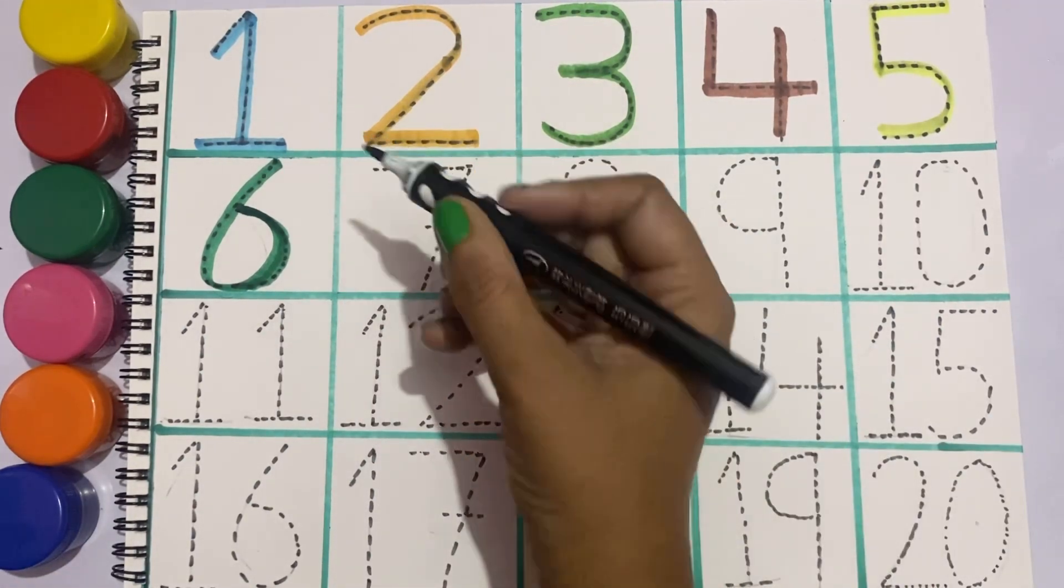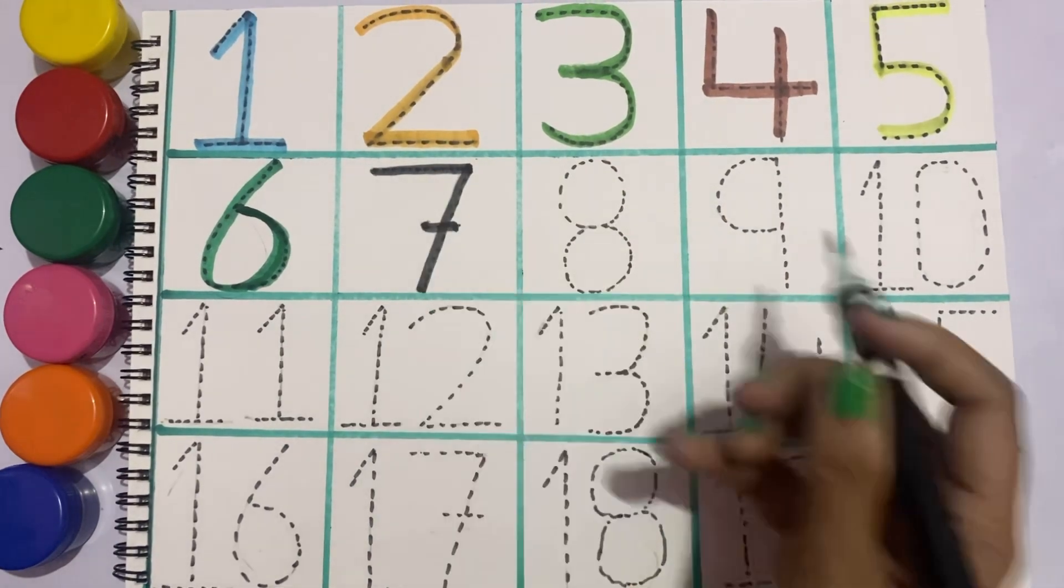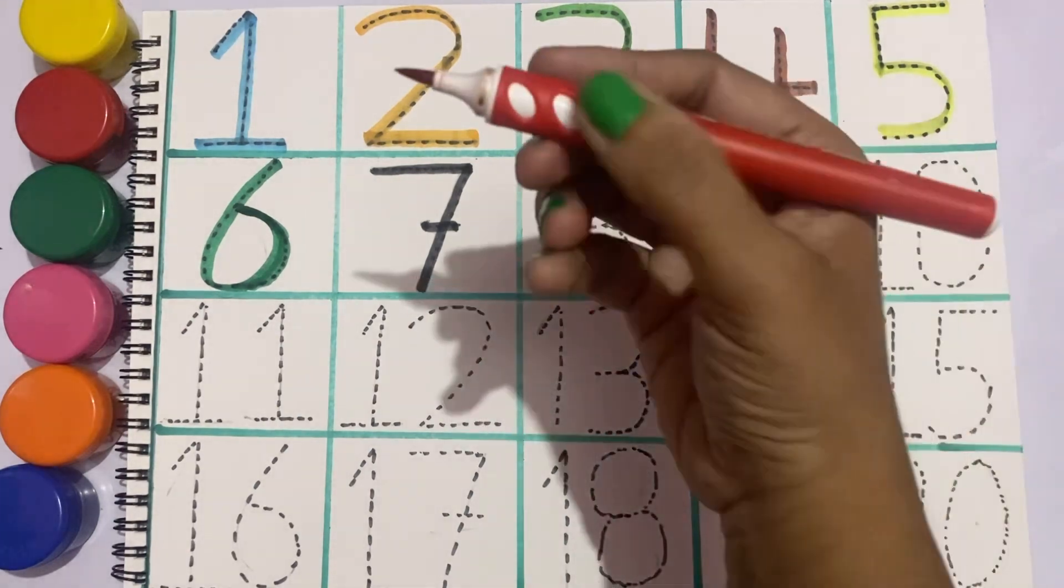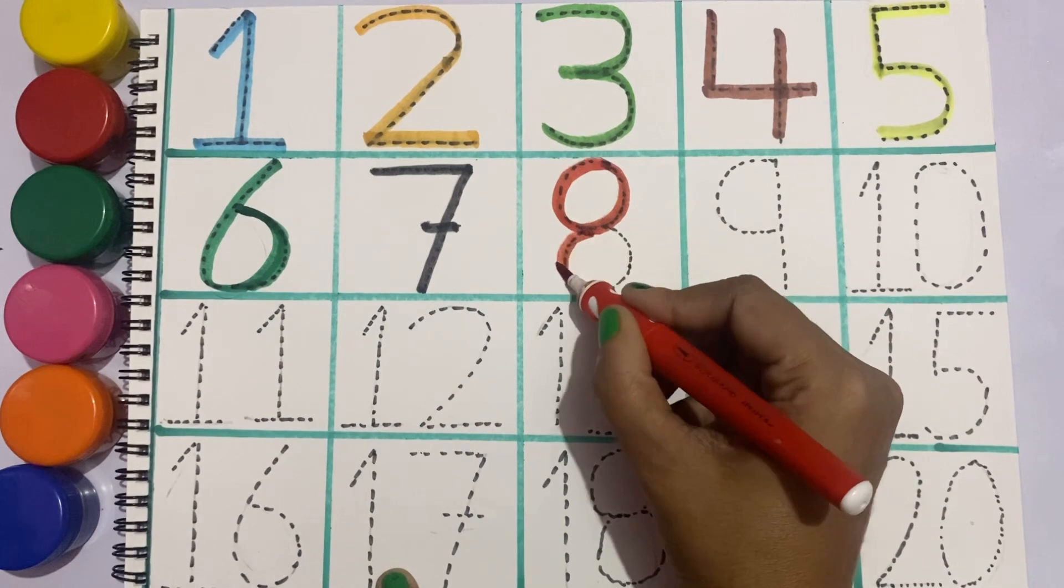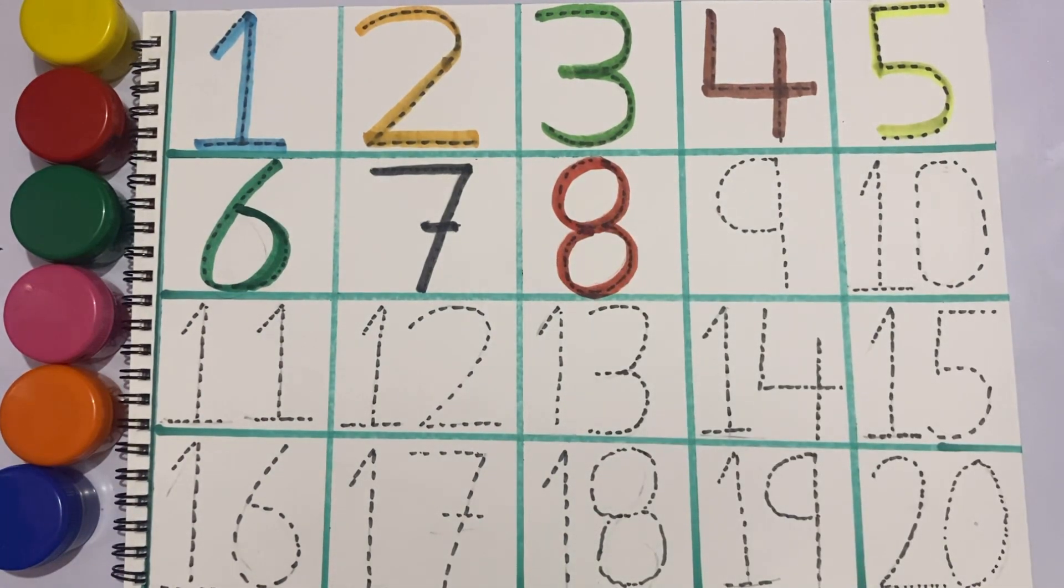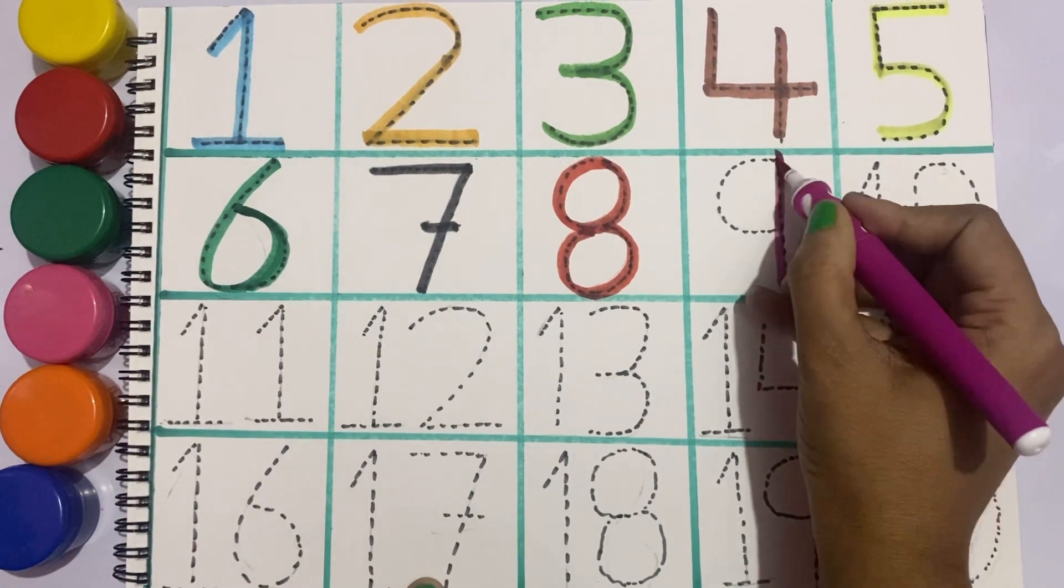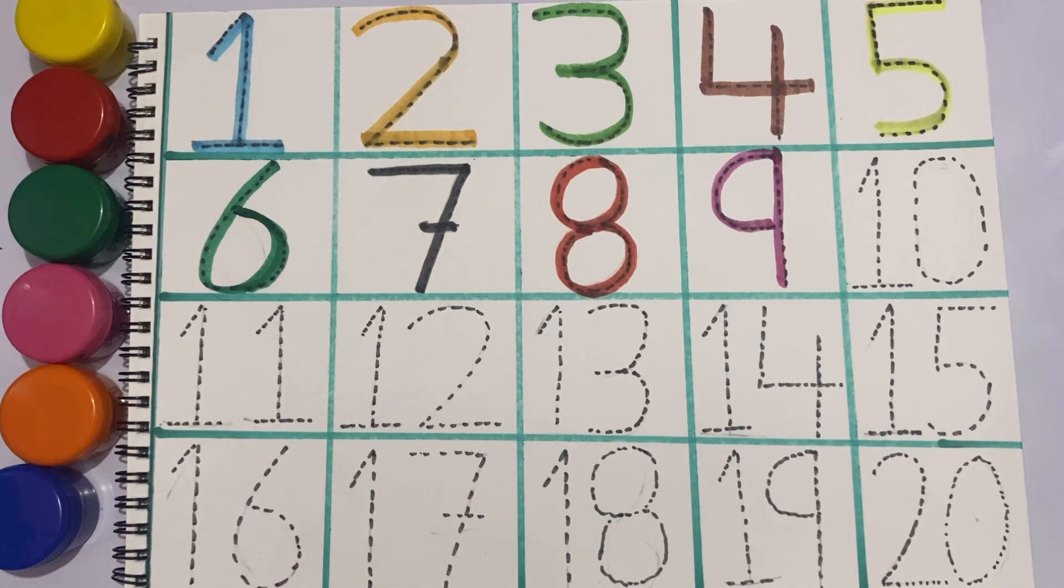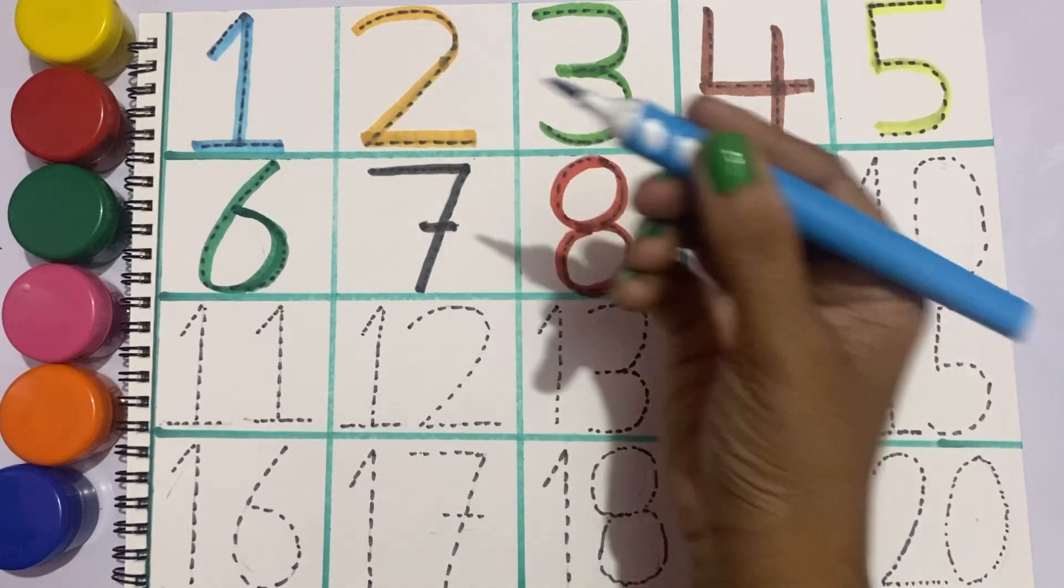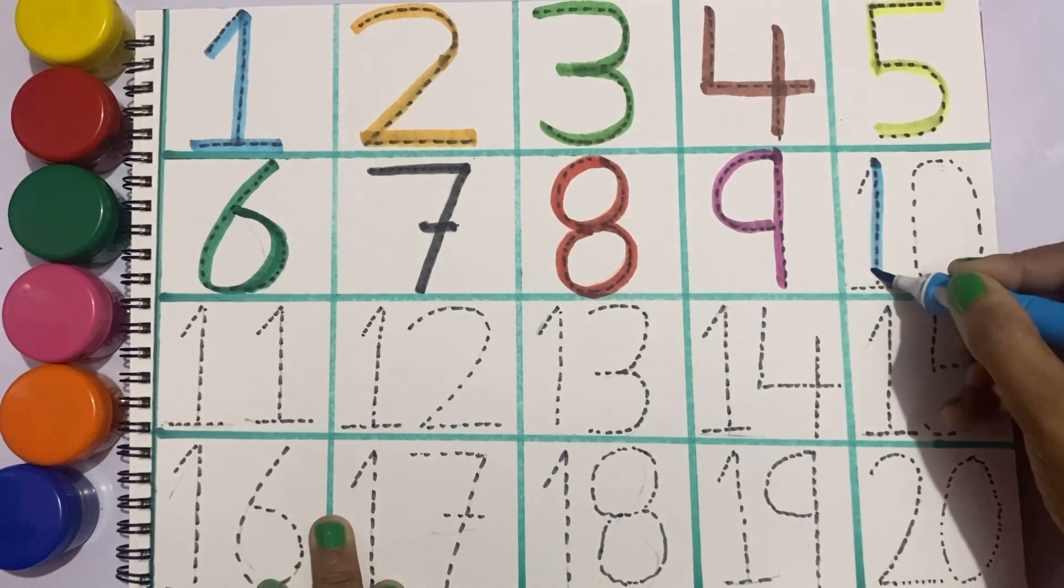Black color, let's write seven. Seven. Red color, let's draw eight. Eight. Pink color, let's draw nine. Nine. Now let's write ten. Sky blue color, so this is our ten, one.